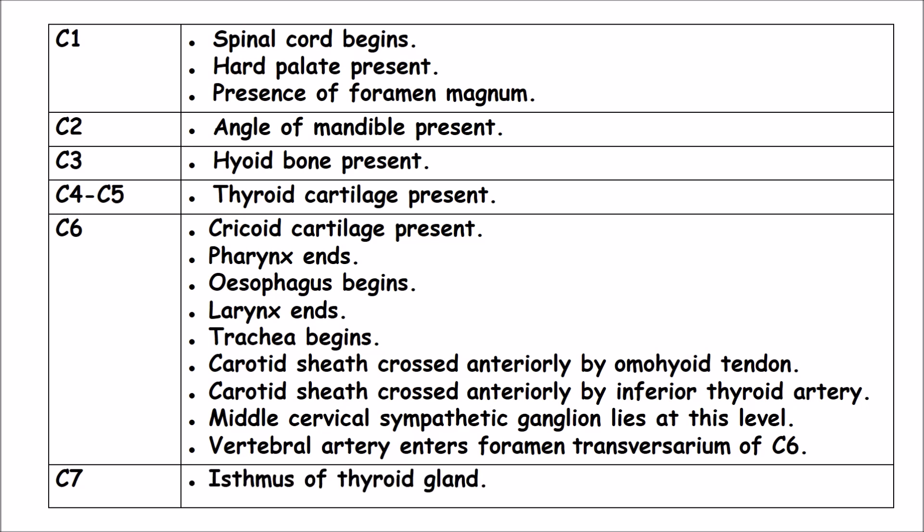C7: The isthmus of the thyroid gland is present. Now, moving on to the thoracic vertebrae.